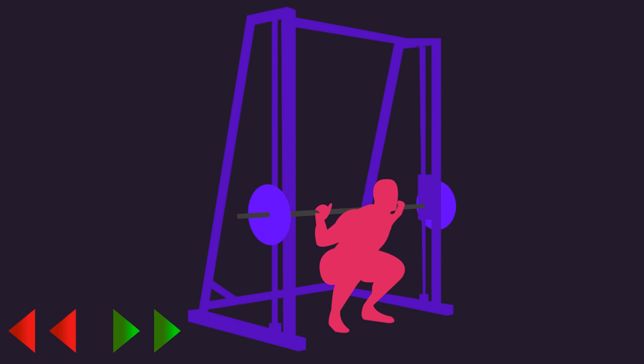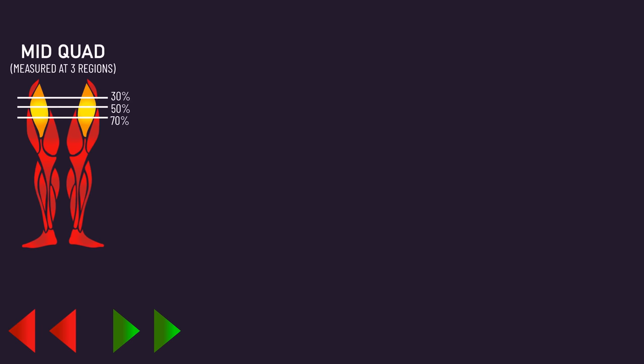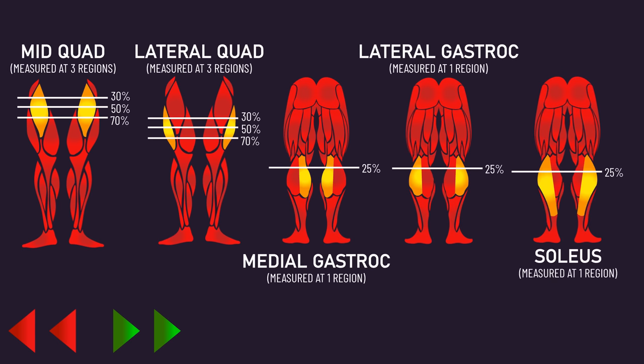Before and after the study, strength was assessed via 1 rep max on the smith machine squat, and muscle growth via thickness of the mid-quad, lateral quad, medial gastrocnemius, lateral gastrocnemius, and soleus.